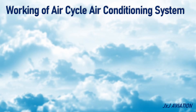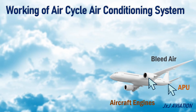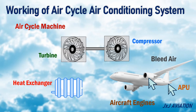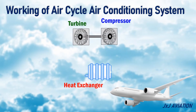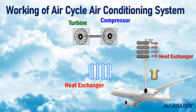Working of Air Cycle Air Conditioning System. This system requires air which is taken from the aircraft engines or the APU — this is called bleed air. This air is sent through an air cycle machine, or ACM. The ACM consists of a heat exchanger and a compressor turbine unit. The bleed air initially flows through a heat exchanger where the temperature is reduced.